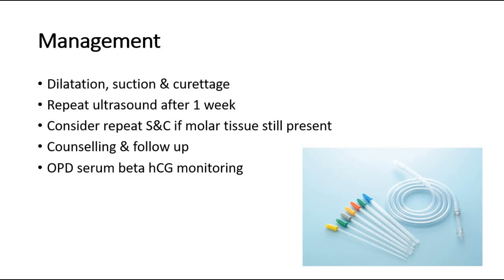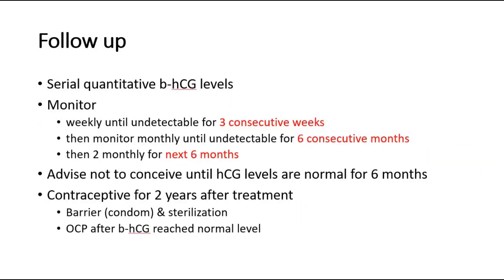Counseling and follow-up, and serum beta-HCG monitoring in the outpatient department. During follow-up, we should determine the serial quantitative beta-HCG levels and monitor weekly until it is undetectable for 3 consecutive weeks, then monthly until undetectable for 6 consecutive months, and then 2-monthly for the next 6 months. Any rise in levels should prompt a pelvic examination and further evaluation for persistent gestational trophoblastic disease or any metastasis. Women are advised not to conceive until their HCG levels are normal for at least 6 months, because pregnancy would also cause an increase in beta-HCG levels, making it difficult to detect whether high HCG is due to pregnancy or persistent molar disease.